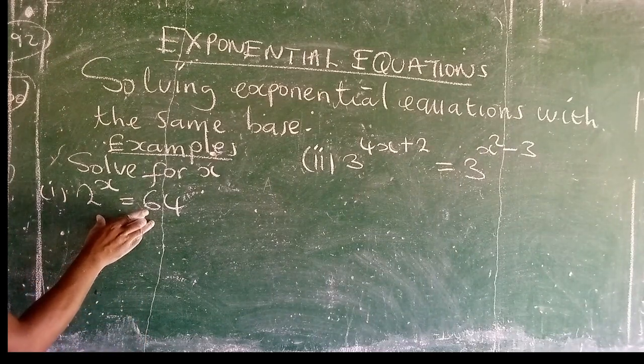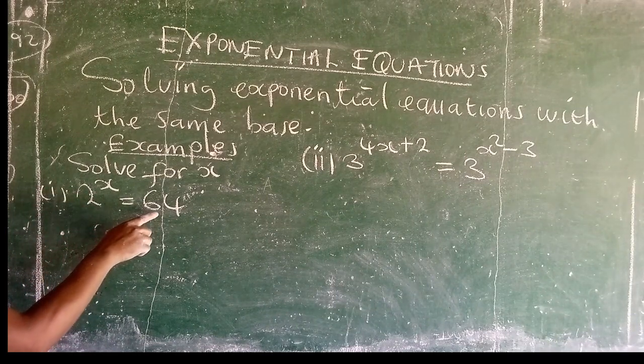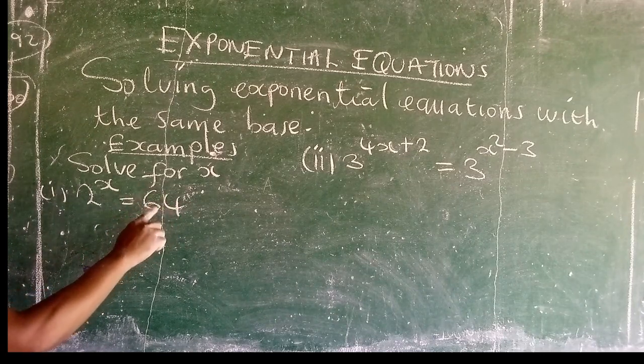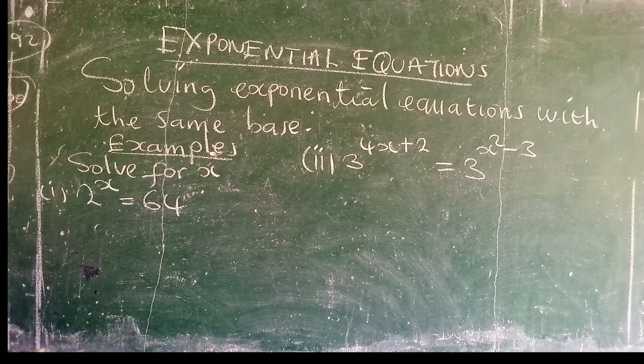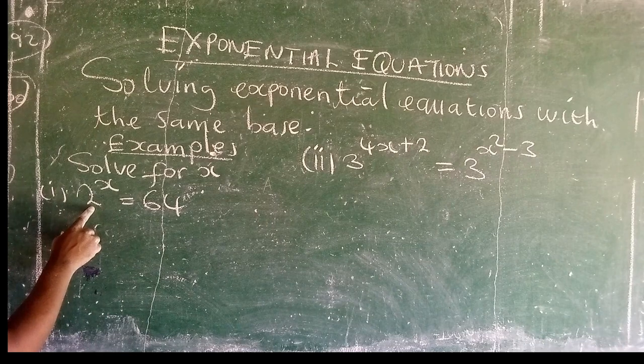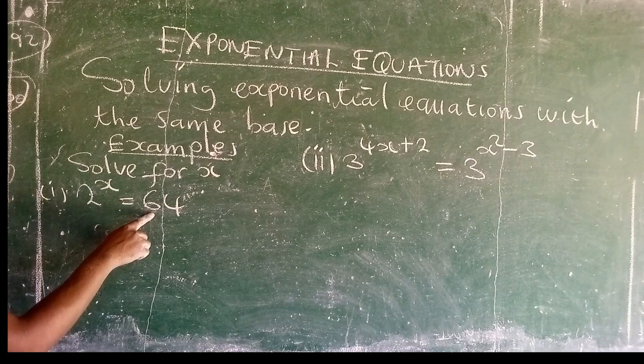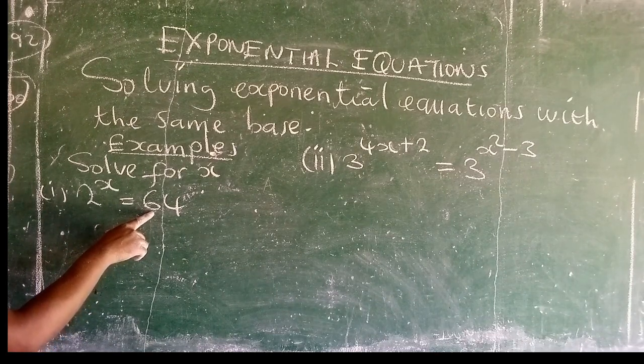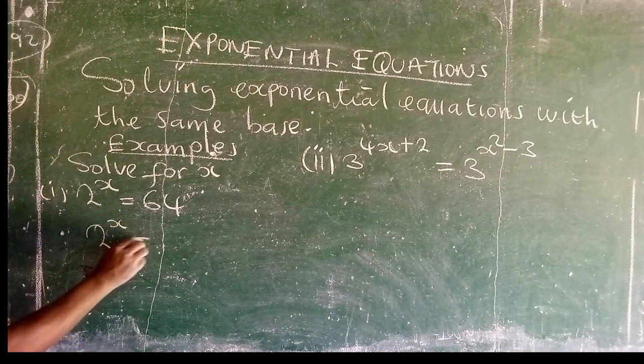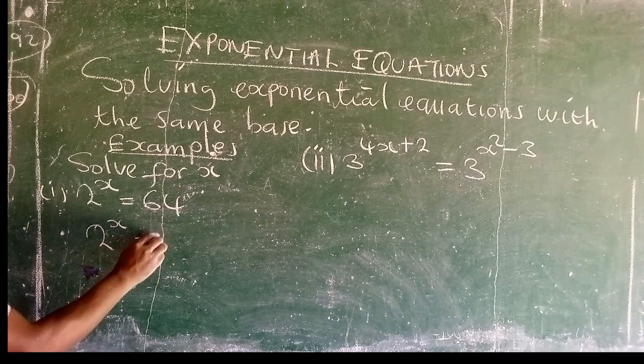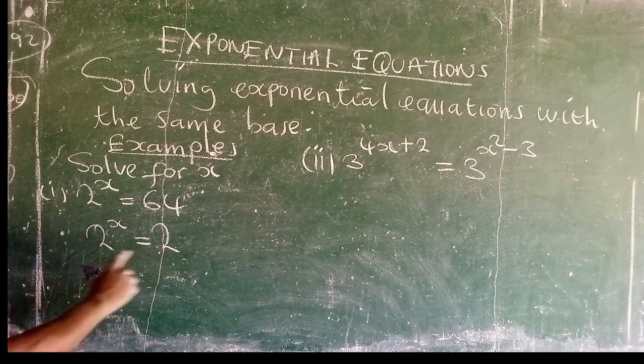We start with the first. What we need to do in the first problem is we have to make sure that this one, which is the whole number, is written in exponential form. Since we have the base as 2 here, we have the exponent as x. We have 2 raised to the power x. This is equal to, we have to write this one so that it has 2 as its base so that we have the same bases.